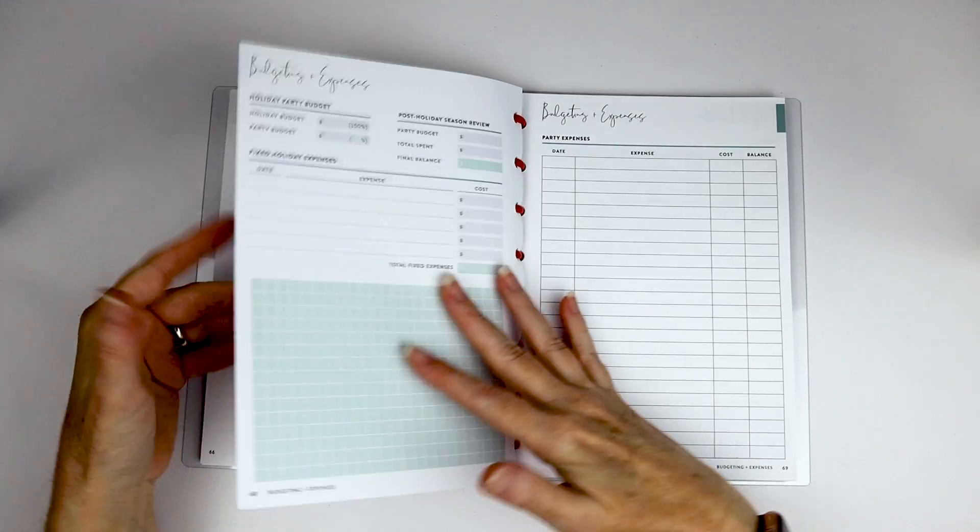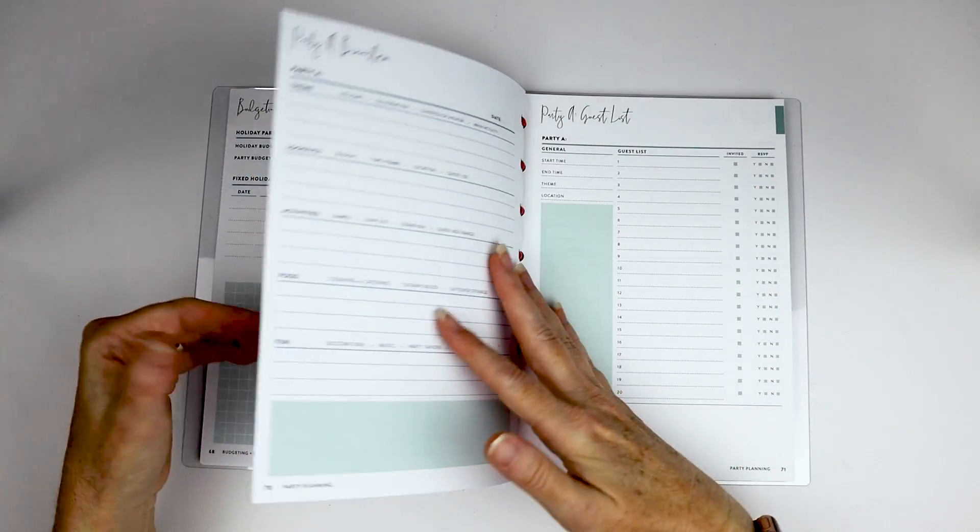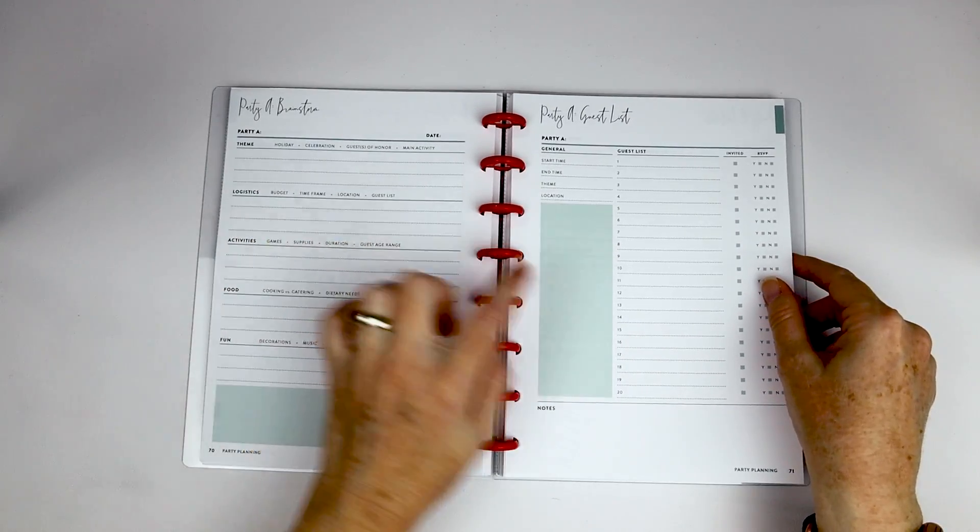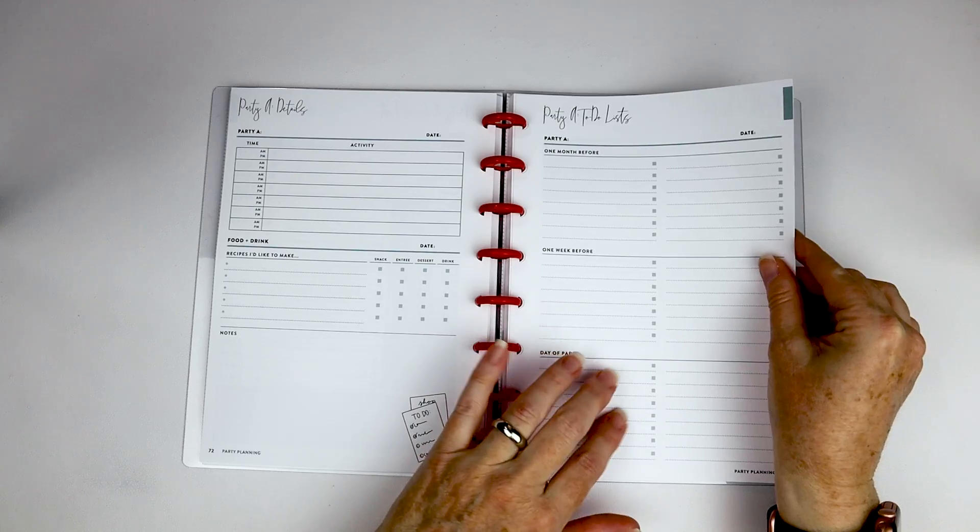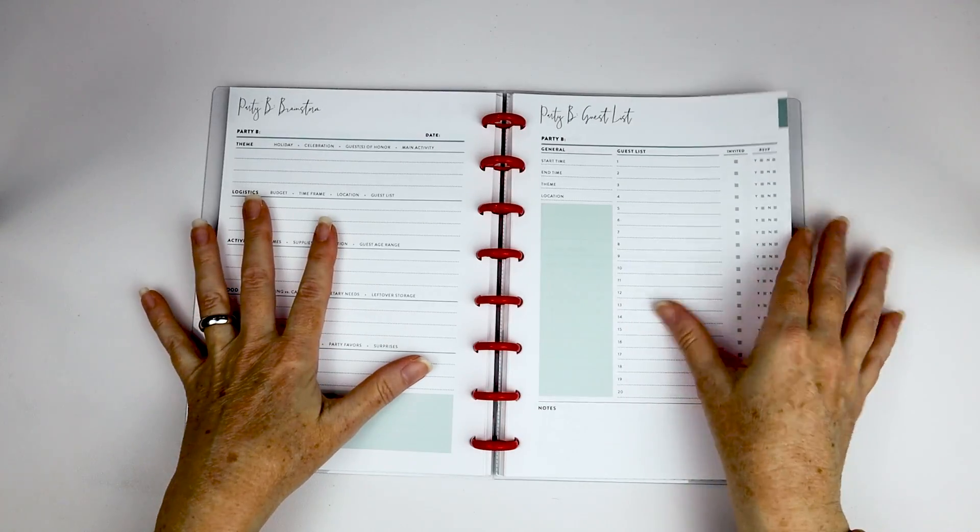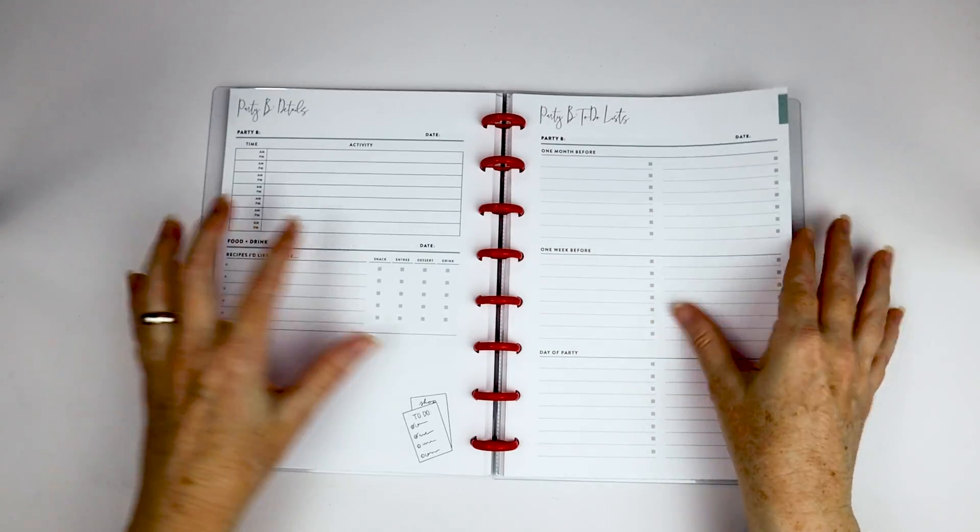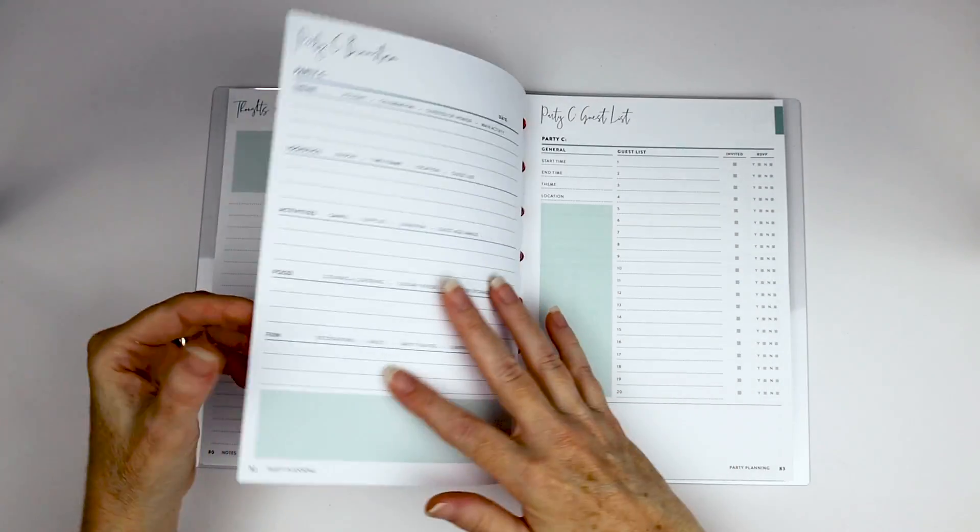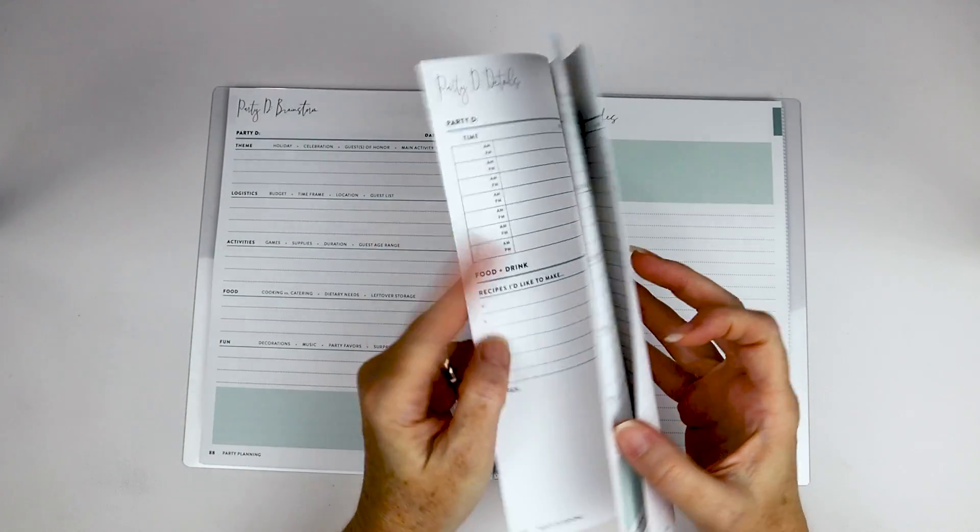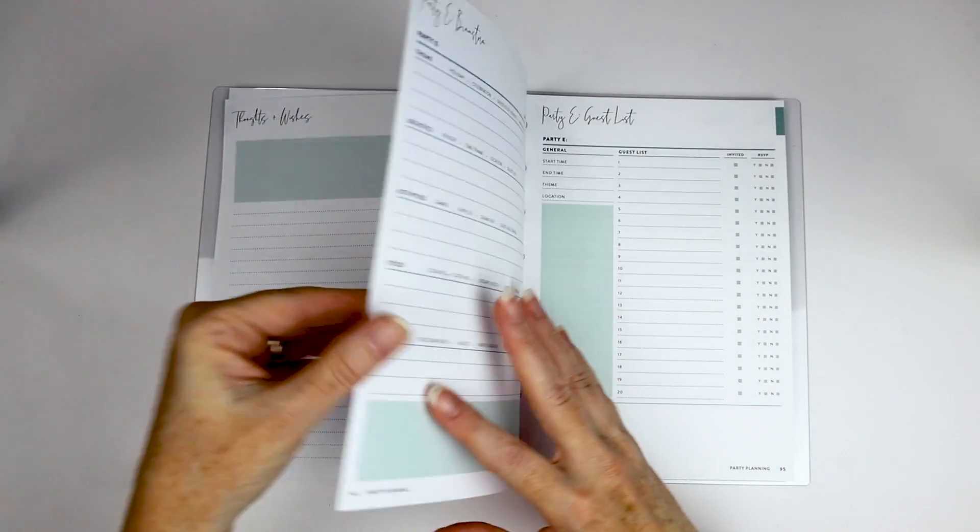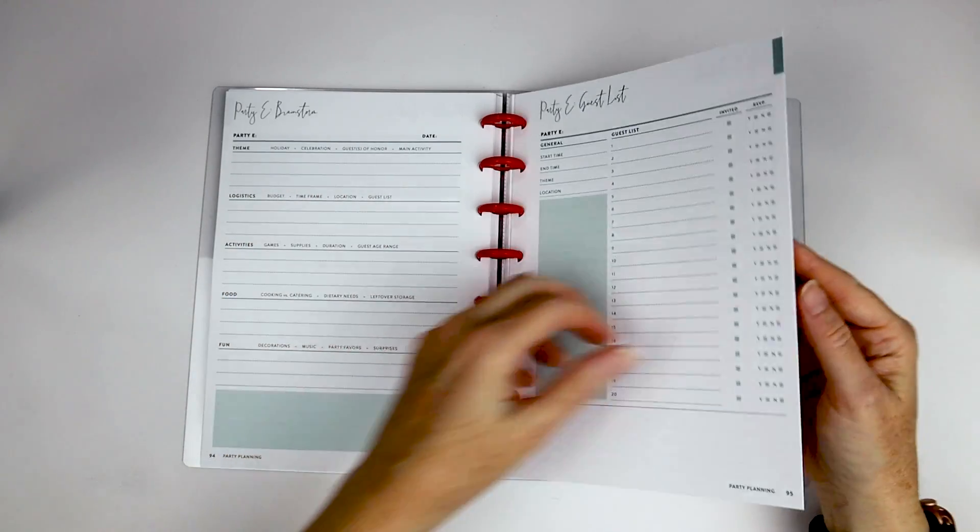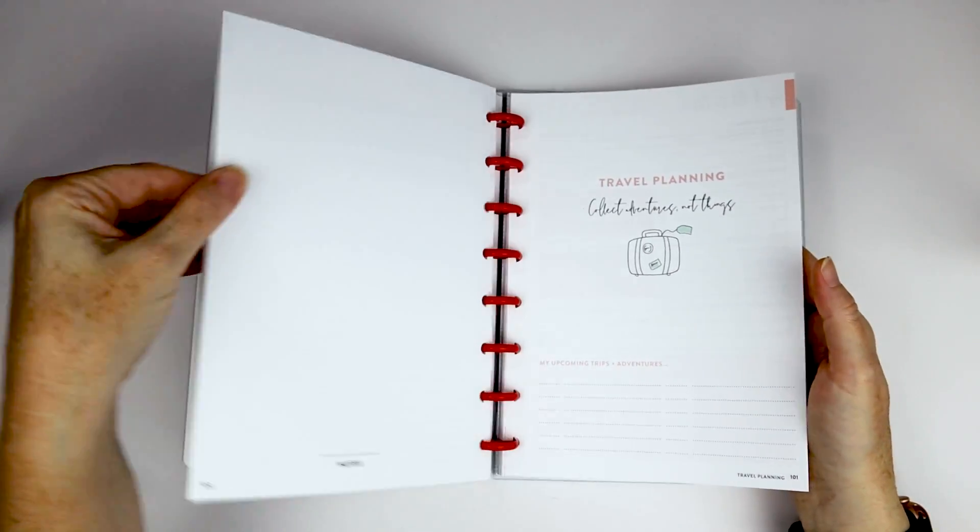So the other thing, if you notice, the tops of the pages are color-coded, so it's kind of easy to find each section if you're just flipping through. Next section is party planning, so we have another section for budgeting and expenses. And then I think there's room for four parties. So we have party A, brainstorming guest list, details, to-do lists, and then thoughts and wishes. Same thing for party B, brainstorm guest list, details, to-do lists, and then some thoughts pages. So then there's party C, and then party D. So it gives you plenty of room. Oh, I lied. There's a party E, so you have five. So if you wanted to do, like, one each week or, you know, and then an extra one for New Year's, there's room for all of that.